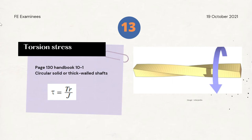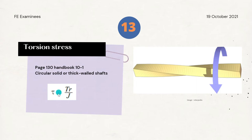Now we'll talk about torsion. In the field of solid mechanics, torsion is the twisting of an object due to an applied torque. Notice the twisting of the section in this photo. This torsion produces tangential stresses that are expressed on page 130 of the handbook, version 10.1, for solid and thick-walled shafts. The formula is: tau equals T times r over J, where T is the torque about the longitudinal axis and J is the polar moment of inertia.